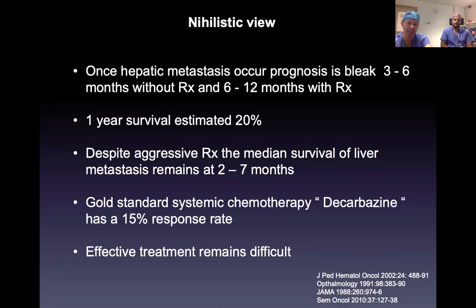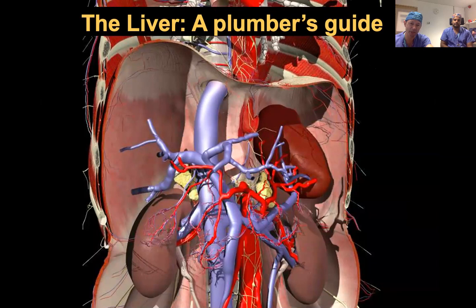People sometimes say, why are we bothering looking for tumours? Because once you've detected them, the outlook is bleak. What I'd like to show you is that that's changed over the last few years. We've now got much better treatments available, and therefore it is important to pick up tumours early. To give you an idea of how we can treat the liver, we're going to go back to our plumber's guide — we see ourselves as upmarket plumbers.